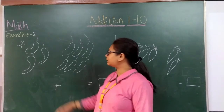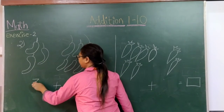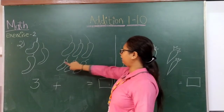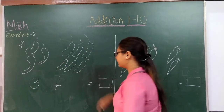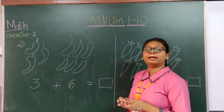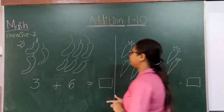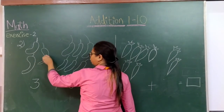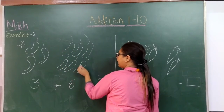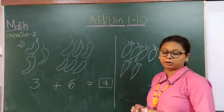Going to the next one. How many cucumbers can you see here? 1, 2 and 3 — so 3. And here: 1, 2, 3, 4, 5, 6 — so 6. How many in total? 3 plus 6 — when we take 3 and add 6 more to it, it becomes 1, 2, 3, 4, 5, 6, 7, 8, 9 — how many? 9. So we will write 9 in the box.